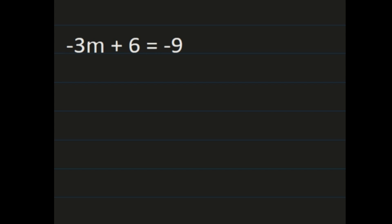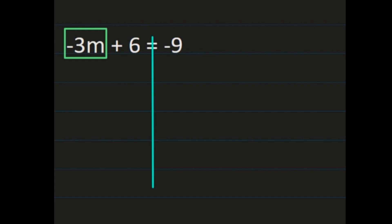For our first example, we have negative 3m plus 6 equals negative 9. Even though we see the negative signs in this problem, our steps aren't going to change. We're looking at the negative 3m — the negative 3 is with the m, it's one piece, and that's what we need to isolate first, so I'm going to box it. You may want to put a line down the center of your equal sign so you can see that what you do on the left, you're doing the same thing on the right.